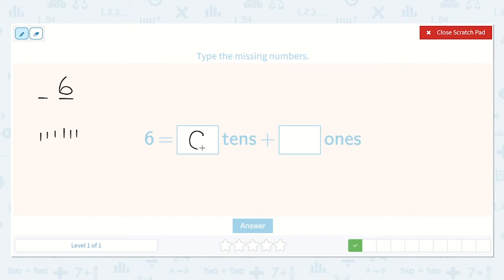So there are 0 tens. But there are 1, 2, 3, 4, 5, 6 ones. Great job.